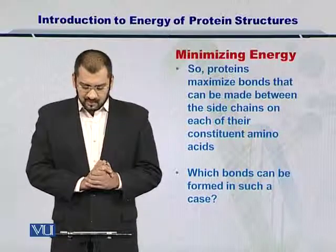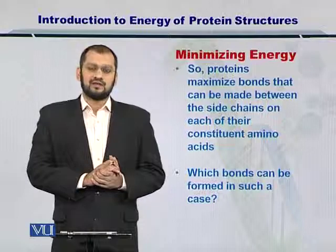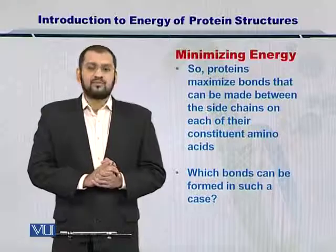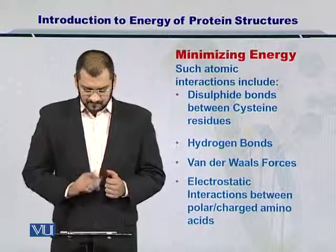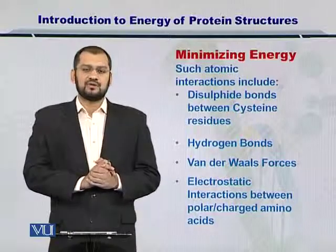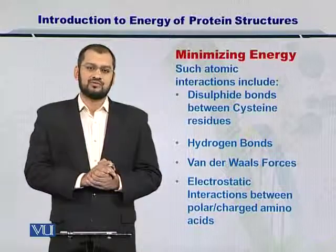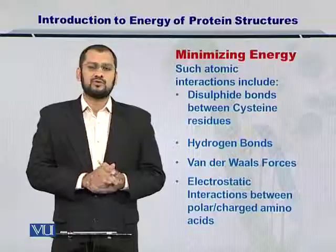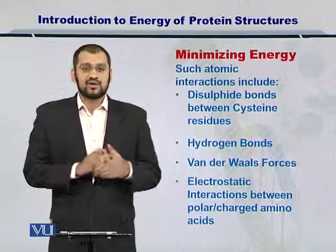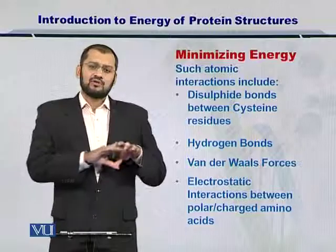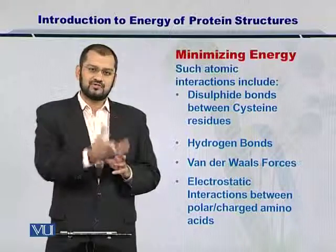If the proteins maximize the bonds that can be made between the side chains of various alpha carbons and they come together, then that is the folded protein. The bonds formed as a result of folding include disulfide bonds — for instance, from cysteine — hydrogen bonds, weak Van der Waals forces between different atoms, and electrostatic interactions between the amino acids. These interactions should be looked at together to estimate the energy of the resulting protein.